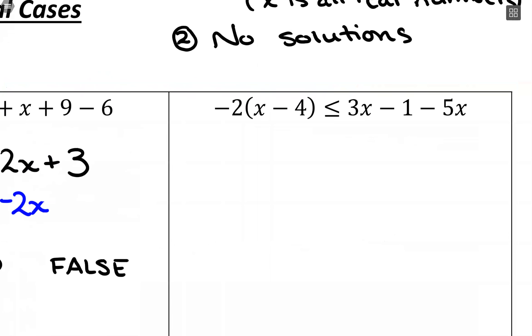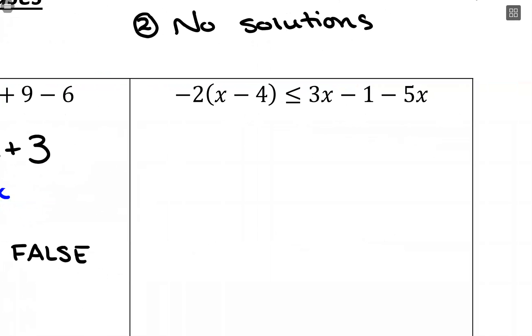Same thing happens with inequalities. So let's look at simplifying this. I would distribute the negative 2 in. This would be negative 2x plus 8 less than or equal to 3x minus 5x is a negative 2x minus 1.